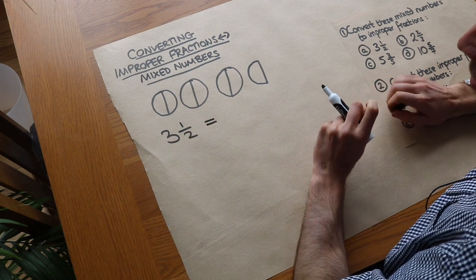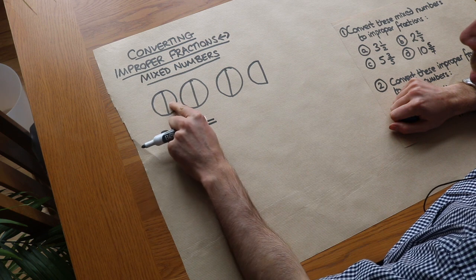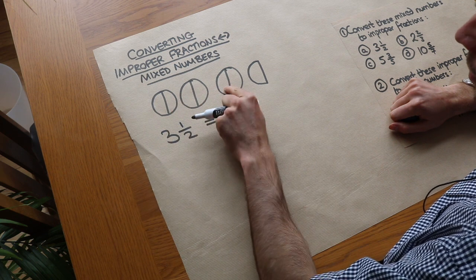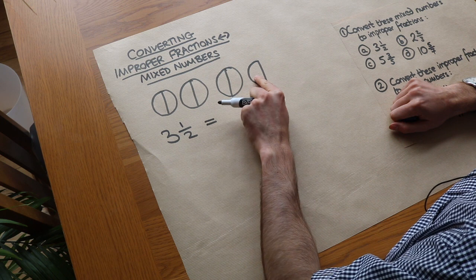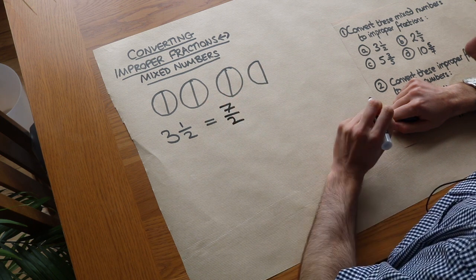But can you see that we could also see how many half pizzas we have? So we've got one half pizza, two half pizzas, three halves, four halves, five halves, six halves, seven halves. So we have seven halves of a pizza.